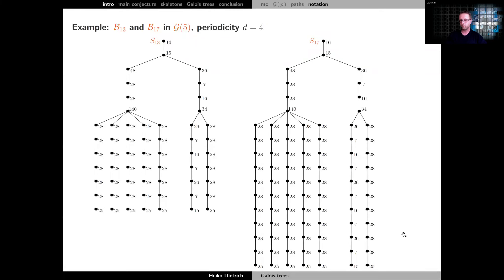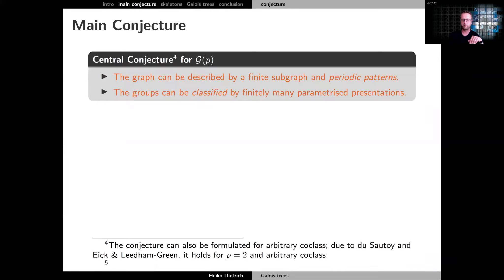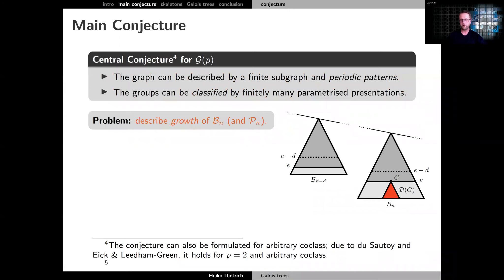However, it's easy to see that the structure of the growing part is much the same as what we see above, so there seems to be an additional periodicity describing how these branches grow. These computer investigations are really the main reason for the central conjecture: the co-class graph G_p can be described by a finite subgraph and periodic patterns, and similar to Blackburn's work, the groups can be classified by finitely many presentations. The outstanding problem is to describe how these branches grow in a well-defined periodic way.